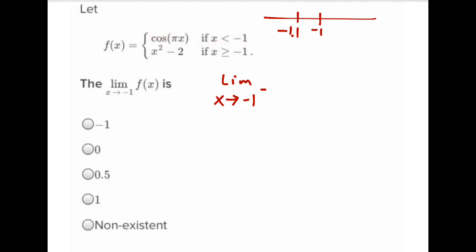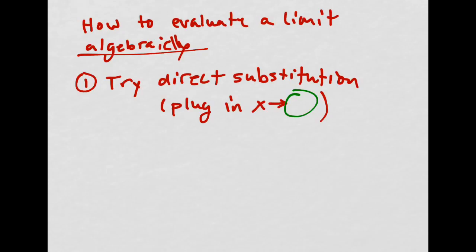So, cosine, we'll take the limit of cosine of pi x. All right, so how do we evaluate this limit? The first step, step one, is to use direct substitution. So how do you evaluate a limit algebraically? Number one, try direct substitution.